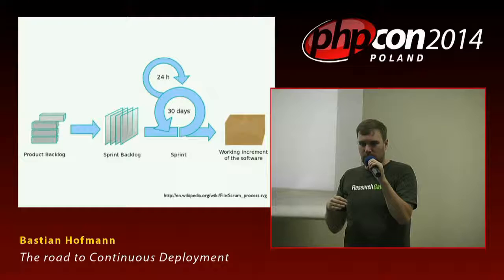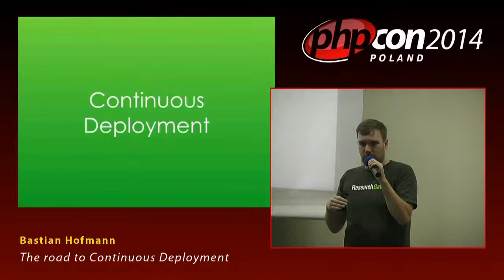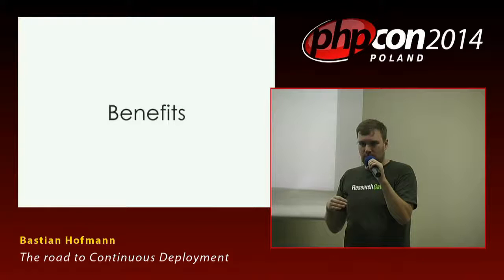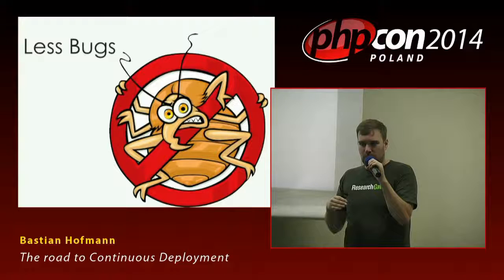If you go a bit further, you could say: what about not releasing after each iteration but continuously releasing? Because we're on the web — it's probably just an rsync and a bit more. That's called continuous deployment. Doing that has a lot of benefits. You're deploying smaller change sets of code to your production server all the time. Instead of deploying 50,000 lines of changed code after two weeks, you're just deploying 100 lines of changed code.